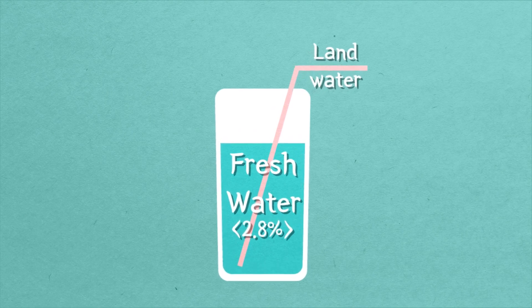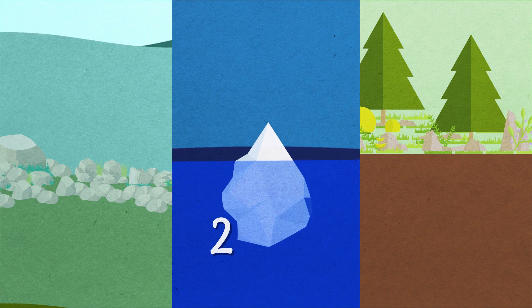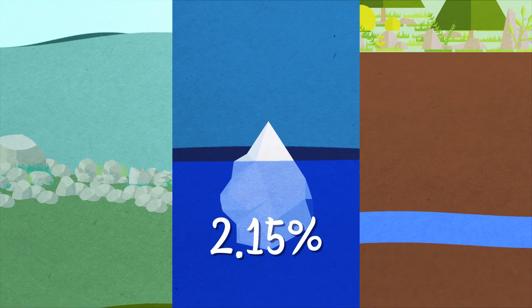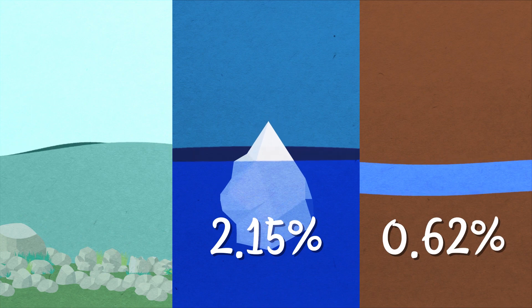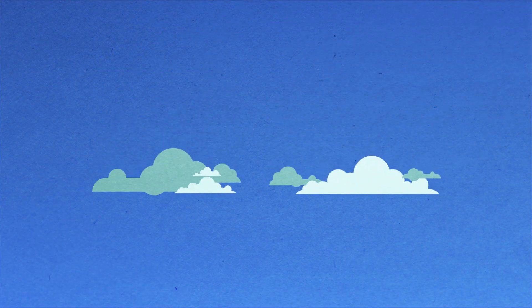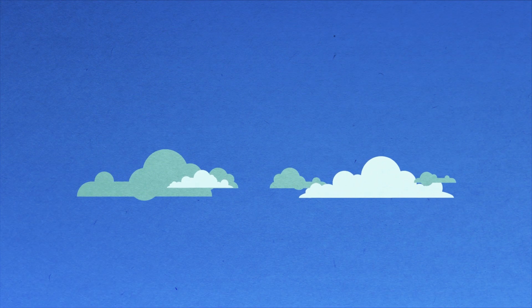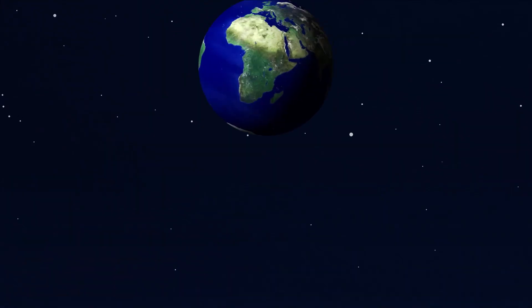Of this land water, the largest portion is in the form of glaciers from the North and South Poles. The percentage these glaciers take is 2.15% and the water flowing under the surface is 0.62%. Rivers, streams and lakes are only 0.02% of all the water on Earth. Additionally, water vapor in the air takes up 0.001%.